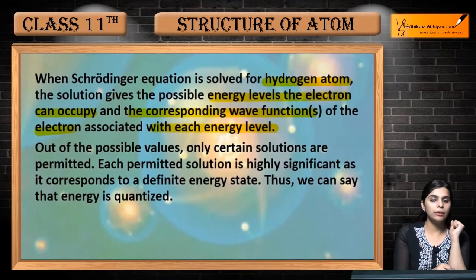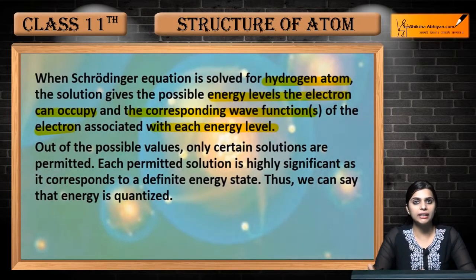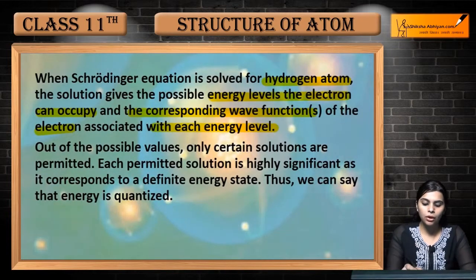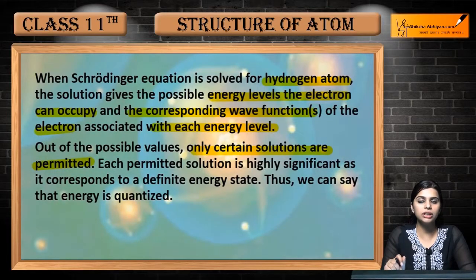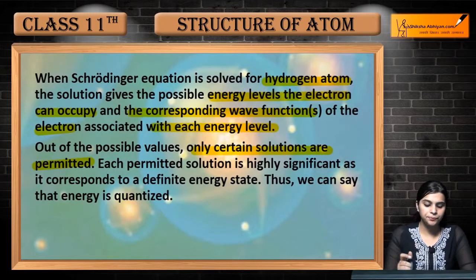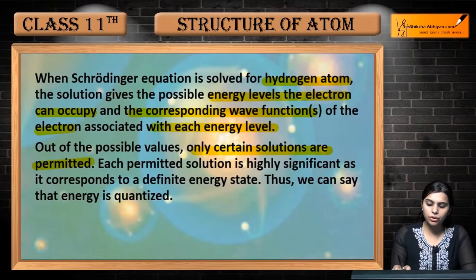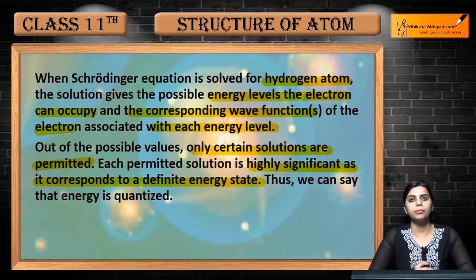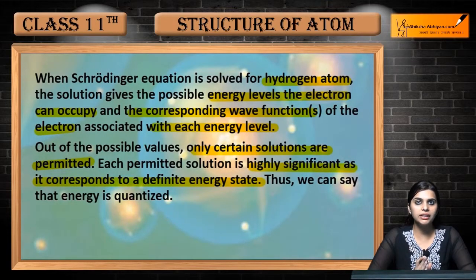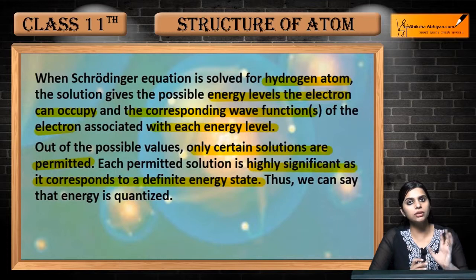Out of the possible values — the possible places we can put our electron — only certain solutions are permitted. Each permitted solution is highly significant as it corresponds to a definite energy state where our electron can reside. This is very significant because a definite energy state is defined — it will be stable.